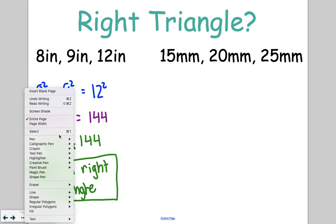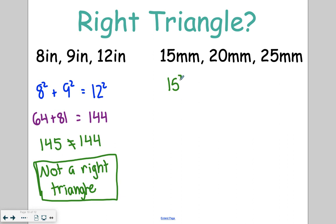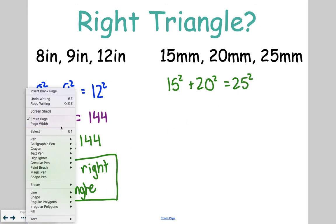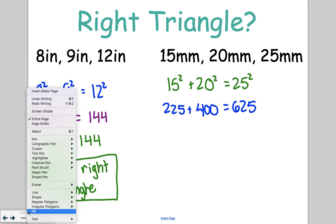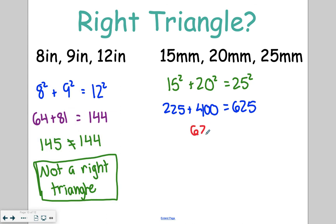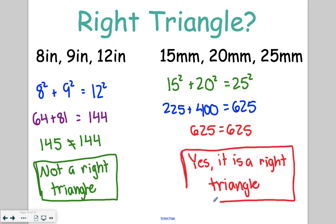When we come over to this second example, we've got 15 squared plus 20 squared equals 25 squared. When we solve those values, we're going to end up with 225 plus 400 is equal to 625. When we do that math on the left side, 225 plus 400 does indeed equal 625. So this would be, yes, it is a right triangle. So if you drew sides of 15, 20, and 25, they would come together and one of the angles in that triangle would be a right angle. So it is indeed a right triangle.